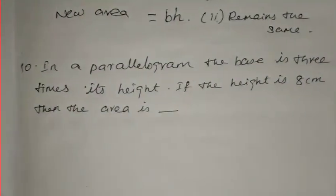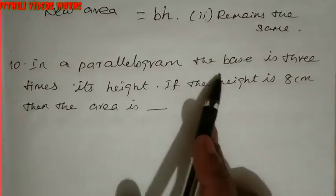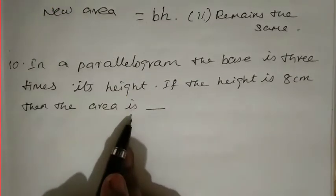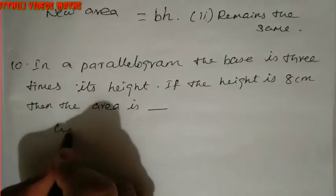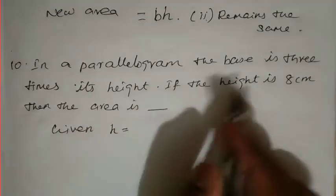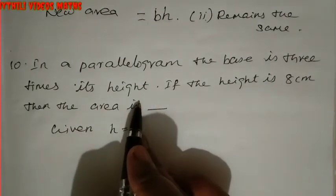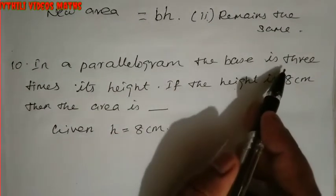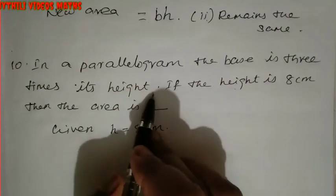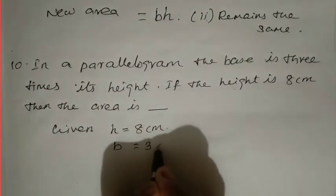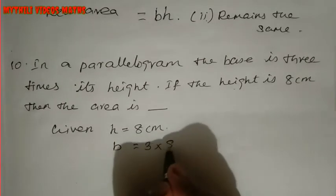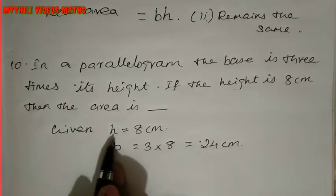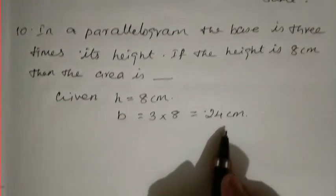The tenth question: in a parallelogram, the base is 3 times its height. If the height is 8 cm, then the area is dash. Write what is given: height h = 8 cm. Base = 3 times its height = 3 × 8 = 24 cm.